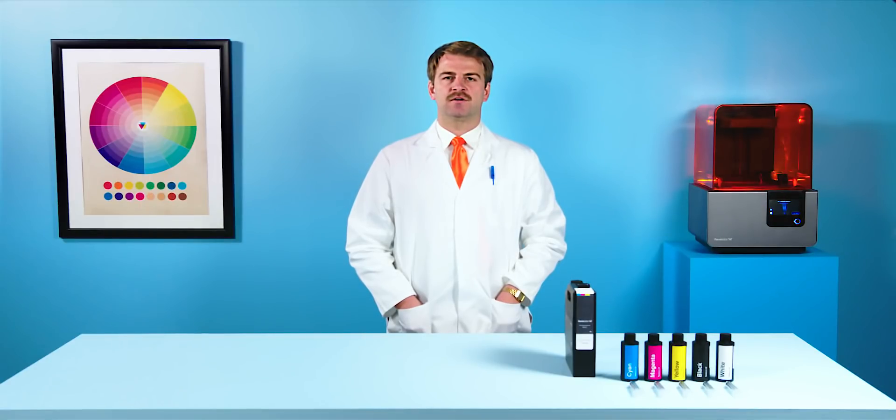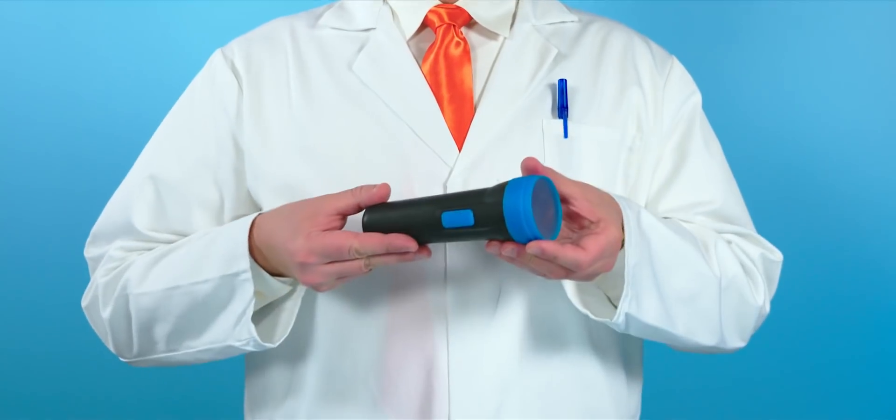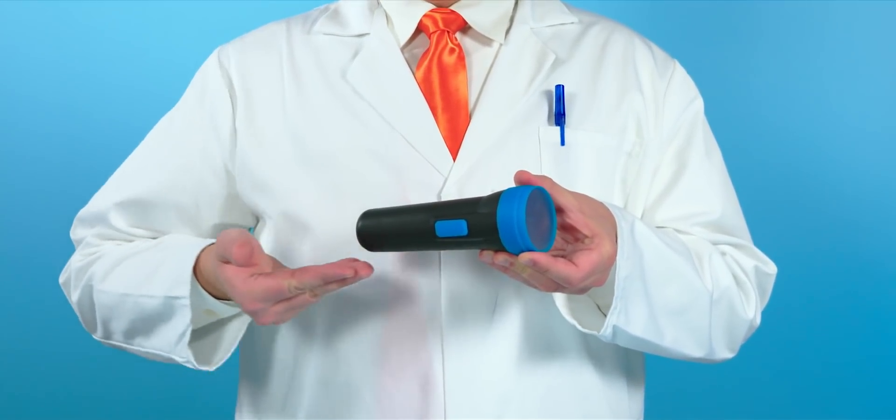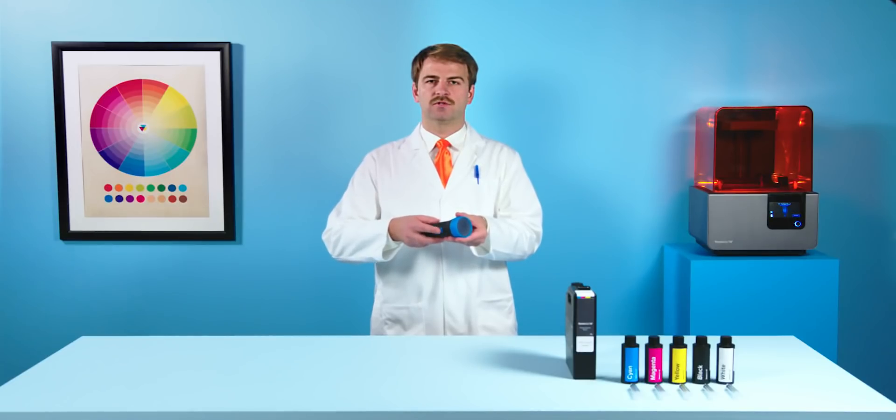As perception shapes color, color too shapes perception. Consider the flashlight. The blue button against the black cylinder draws the eye, and so too draws the hand.